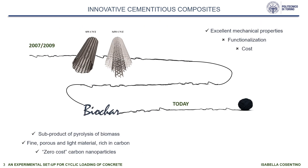The most promising contemporary developments include the synthesis of new forms of carbon. In 2007–2009, the research group of Professor Ferro started experimenting with carbon nanotubes in cementitious composite materials, finding excellent mechanical properties but also problems related to functionalization and cost. Thus, a solution was sought by incorporating biochar, which is the sub-product of biomass pyrolysis processes, and is a fine, porous, and light material.